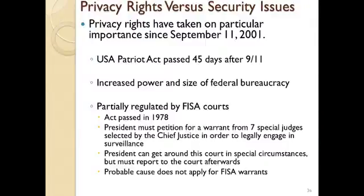This is where we get into the privacy rights versus security issues. When a crisis like that occurs, people are scared and petrified, and they want revenge, but they also want to know that we're safe and that something like that is never going to happen again. So 45 days after 9/11, the USA Patriot Act was passed. It increased the power and size of the federal bureaucracy dramatically and gave unprecedented powers — almost powers in perpetuity — to the president and the bureaucracy. The federal government was partially regulated by FISA courts.